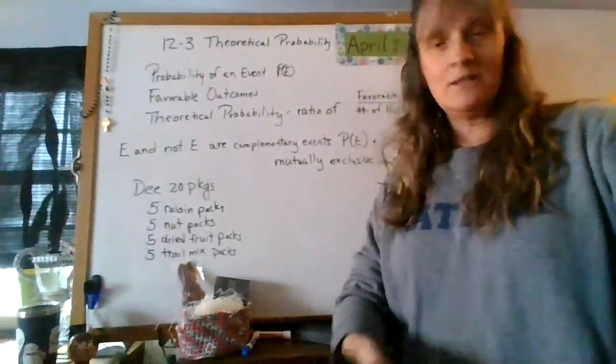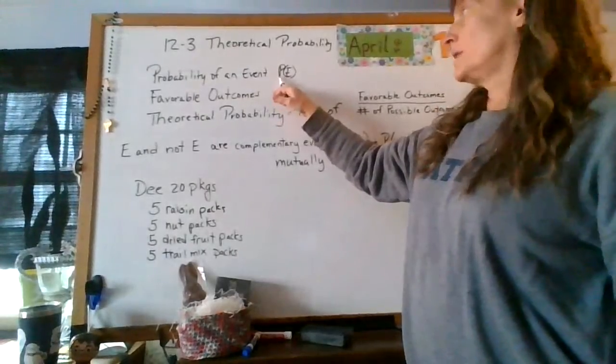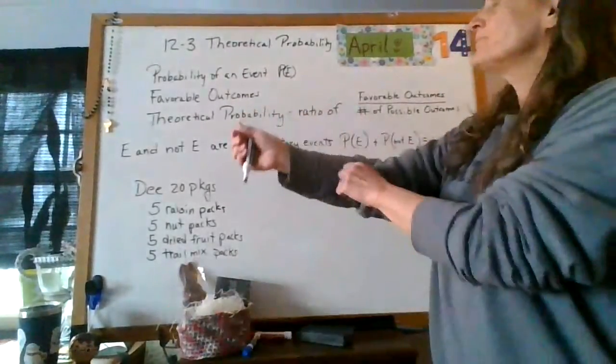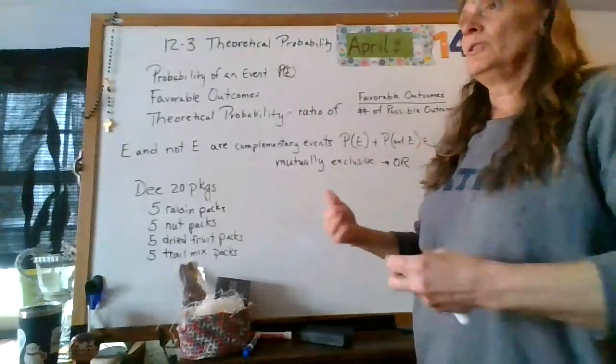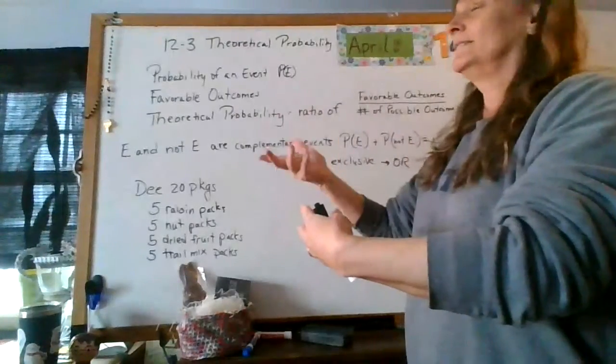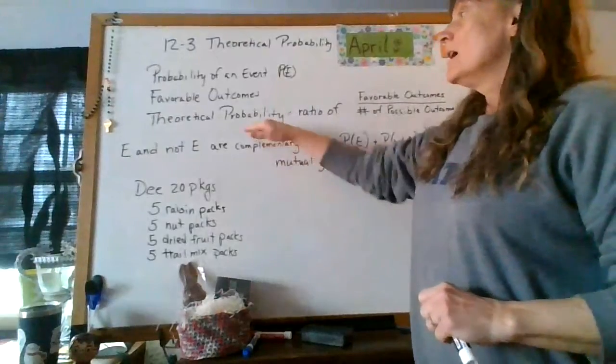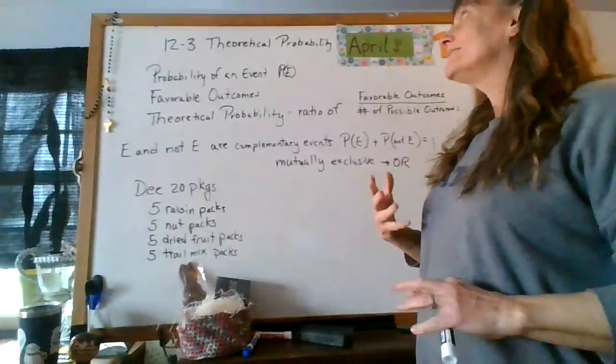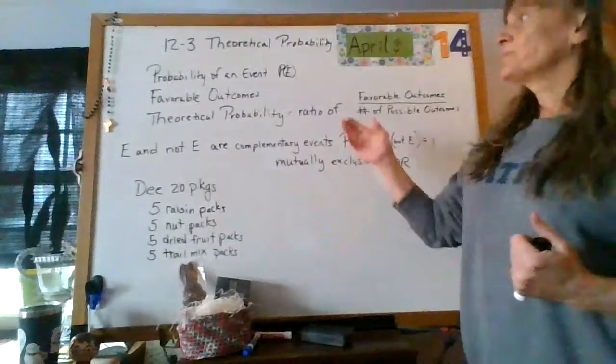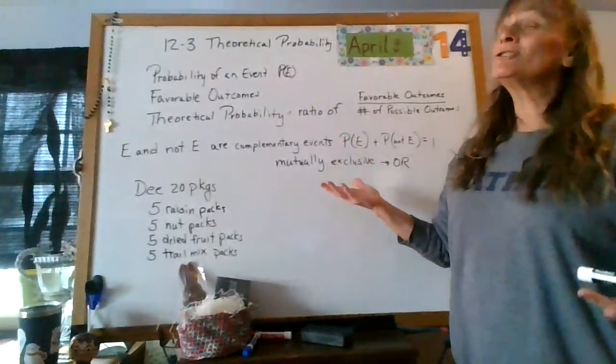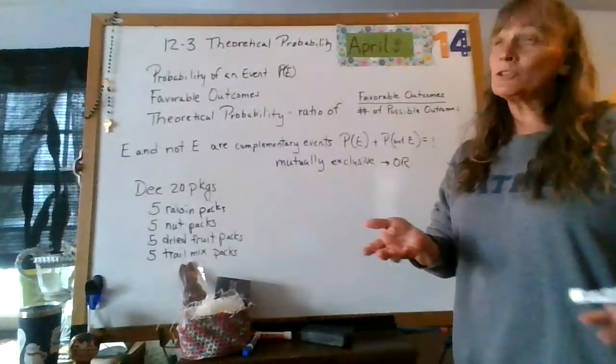All right, so I'm assuming that you have already written this down. The probability of an event, we're going to put as P of an event in the parentheses there. Favorable outcomes are outcomes that we get. Like if we pulled something out or if we rolled something, however many times that happened, that's a favorable outcome. And then theoretical probability. Today we're doing theoretical probability. Tomorrow we're doing experimental probability, which is super fun.